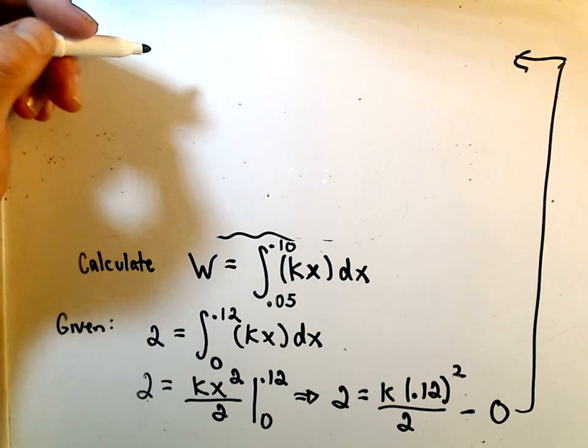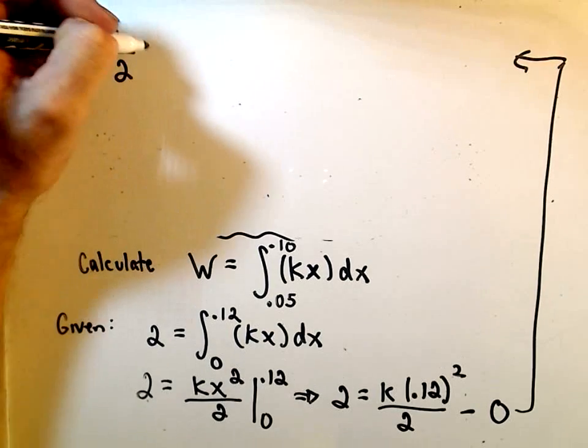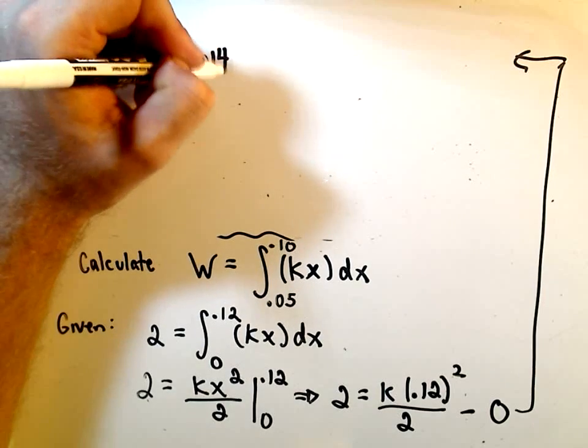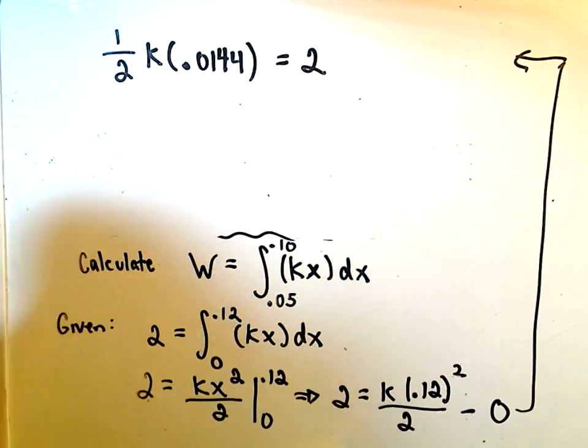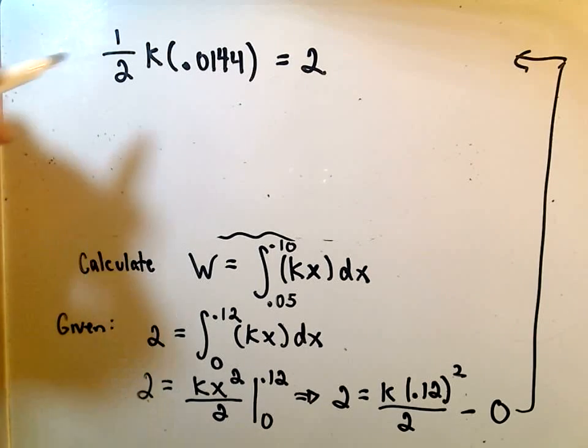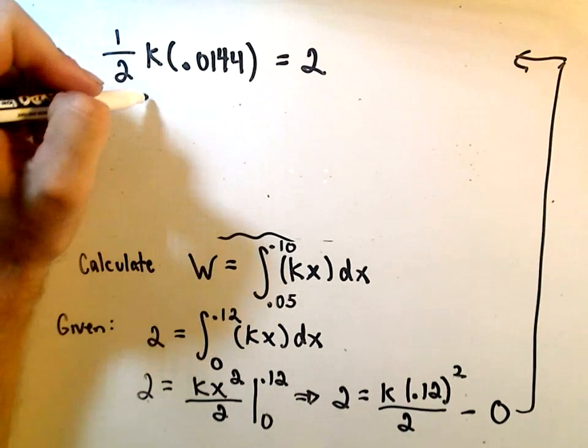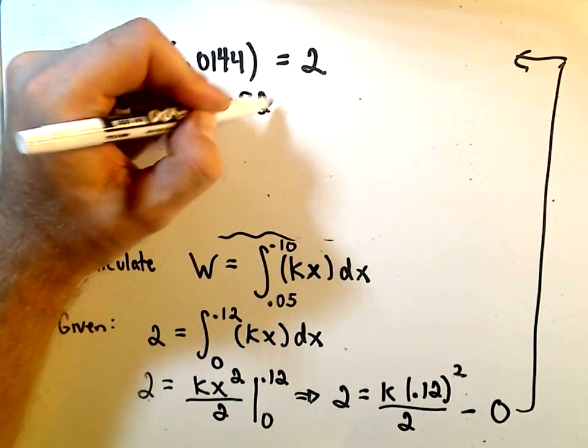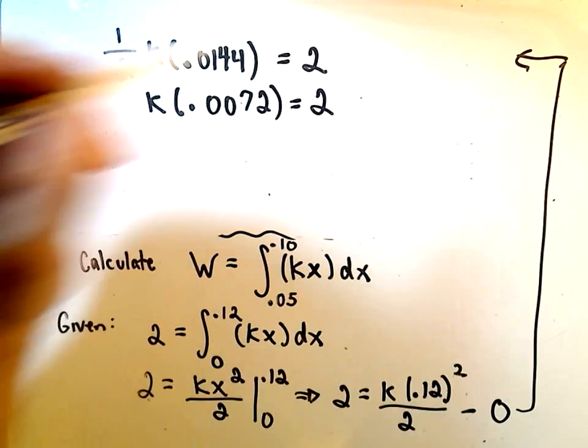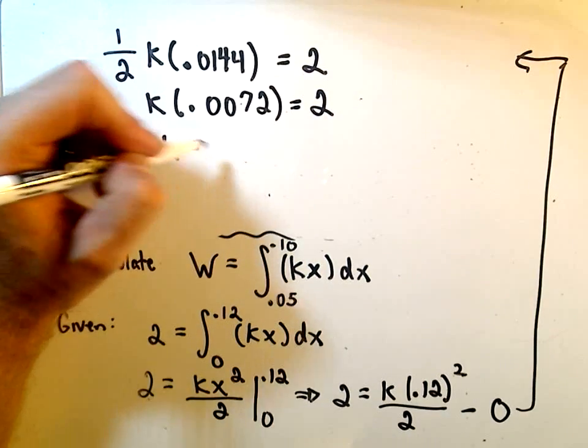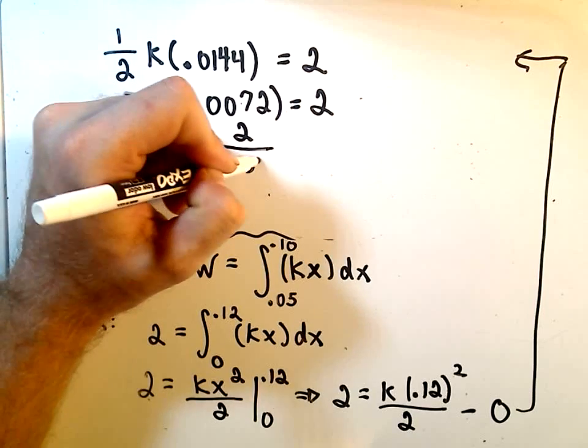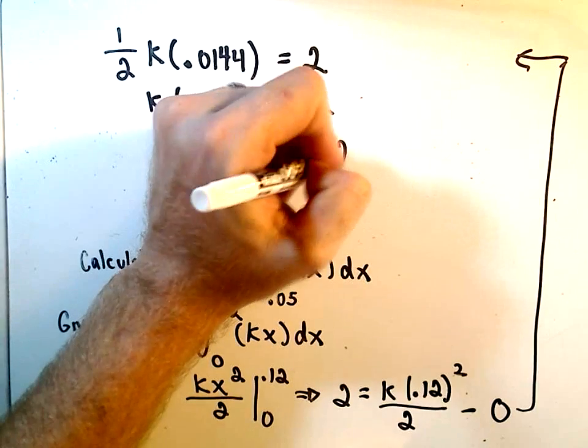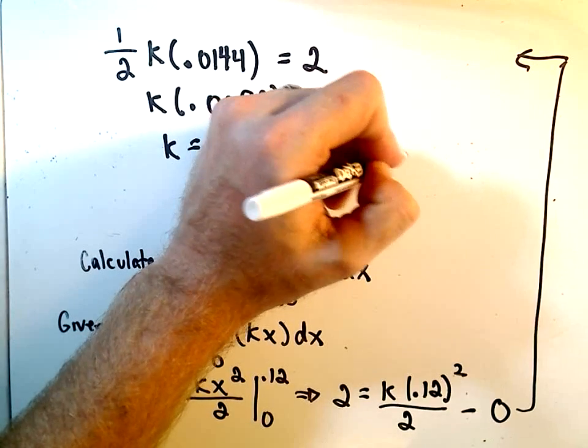So if we simply evaluate that, we can pull the one-half out front. 0.12 squared is going to be 0.0144. We know that's equal to 2. So if we divide by 2, we're going to get 0.0072k equals 2. This is the value for the work, and we'll just divide both sides. 2 divided by 0.0072 is going to be roughly equal to the value 277.78.